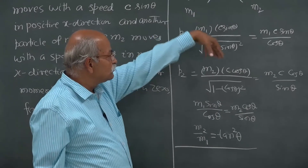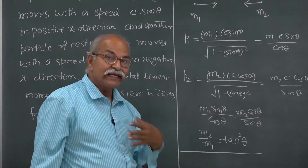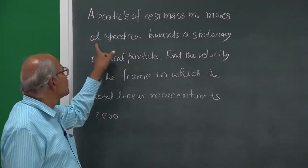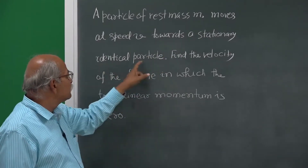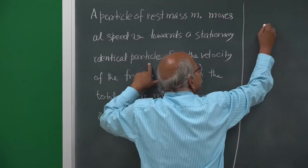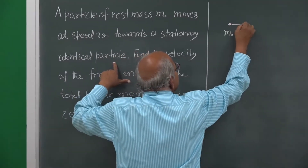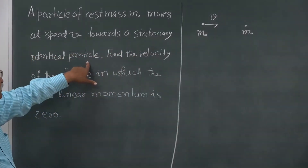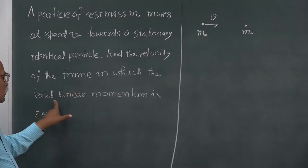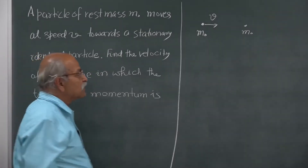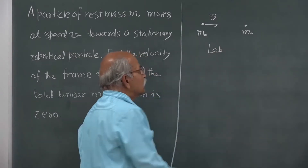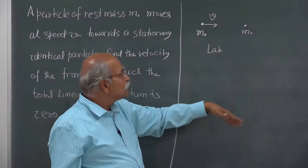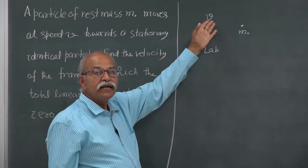This value of m2/m1 = tan²θ will make the total linear momentum 0. Now let us go to the second question. A particle of rest mass m0 moves at a speed v towards a stationary identical particle - the rest masses are the same, but one is stationary. Find the velocity of the frame in which the total linear momentum is 0.